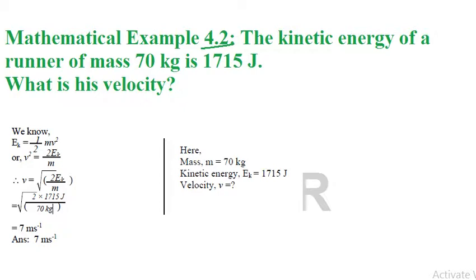Let's start the problem. Here, the kinetic energy of a runner of mass 70 kg is 1715 joules. What is his velocity v? We have to calculate v.